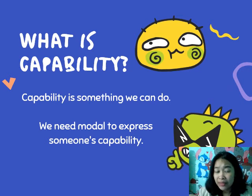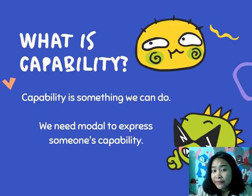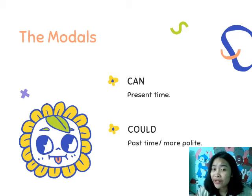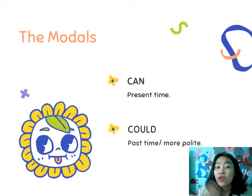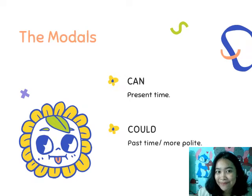What is capability? Capability is something we can do. We need a modal to express someone's capability. The modals used for expressing capability are 'can' — used in present time — and 'could' — used in past time, or to make the sentence sound more polite.